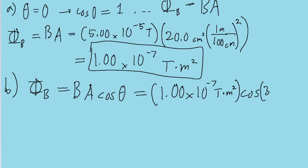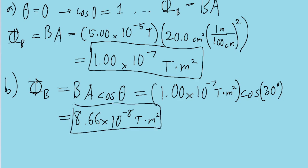Put that into your calculator and make sure your calculator is in degrees mode — not radians or gradians mode — so that it can interpret the angle properly. If you do that, we find a flux of 8.66 times 10 to the power of negative 8 tesla meters squared. And that is the answer to Part B.